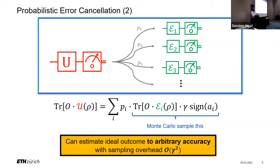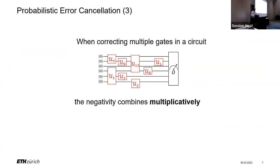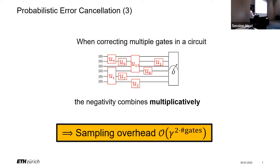This simple single-gate example straightforwardly generalizes to the setting of many gates. The negativities of individual quasi-probability decompositions combine multiplicatively, so the total sampling overhead to error-mitigate a complete circuit is exponential in the number of gates. This illustrates the advantages and disadvantages of error mitigation: the big advantage of probabilistic error cancellation is that we can completely remove the noise without any additional qubits — unlike error correction. The price is a classical resource cost: exponentially many shots as a function of the number of gates.